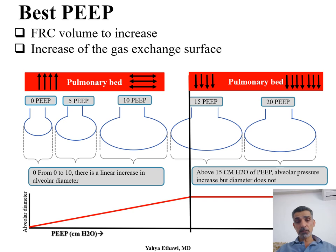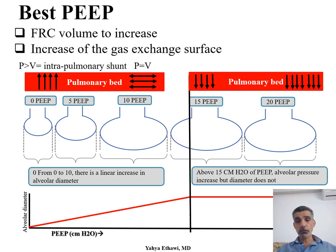What does that mean? There is pulmonary artery, pulmonary vein, and pulmonary vasculature in between. If the alveolar bed is less than the pulmonary bed, then blood coming from the artery through the bed to the vein will not meet the alveoli, and there is no exchange. That blood is shunting — moving directly from artery to vein without touching the alveoli — and that's what we call perfusion more than ventilation, or intrapulmonary shunt.